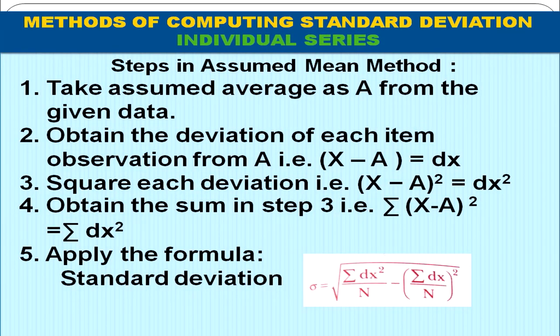The next method is the assumed mean method. The steps are: first, choose an assumed mean A. Second, obtain deviations from A, that is dx = x − A. Third, square each deviation to get dx². Fourth, obtain Σdx². Then apply the formula: SD = √(Σdx² / n − (Σdx / n)²).